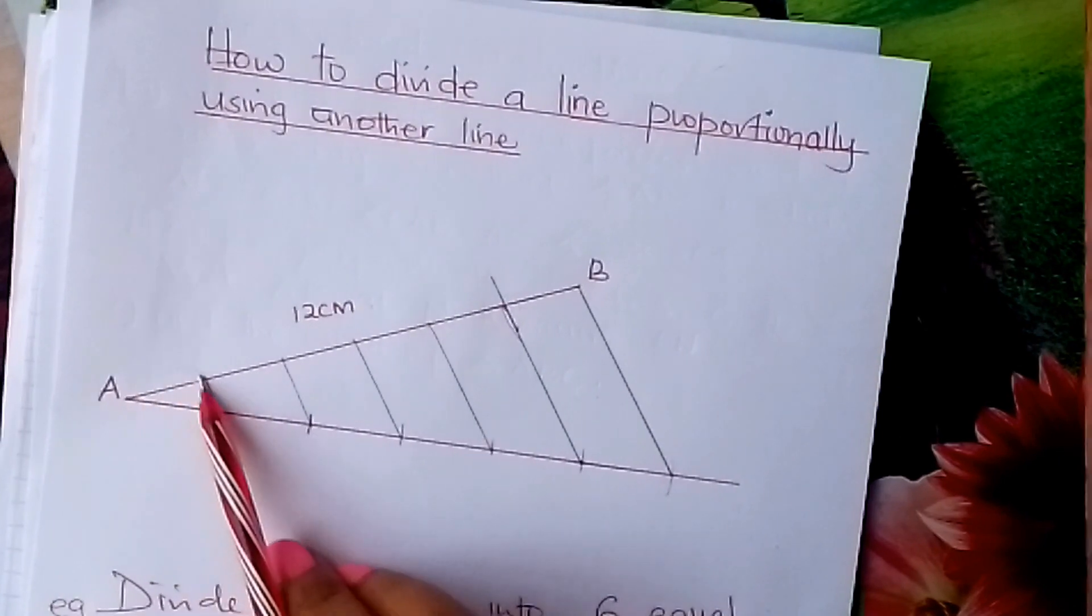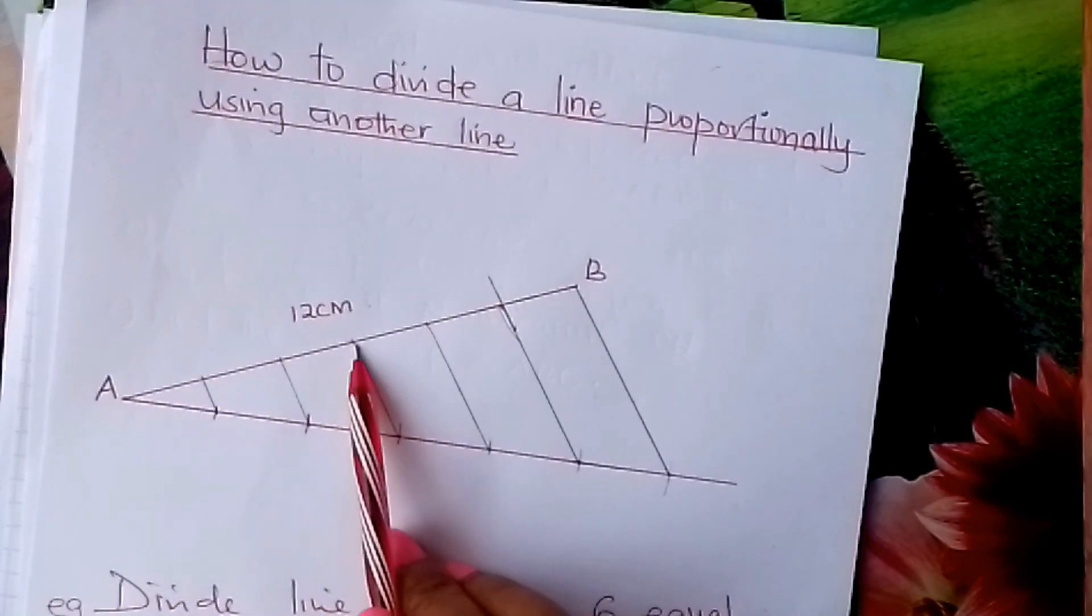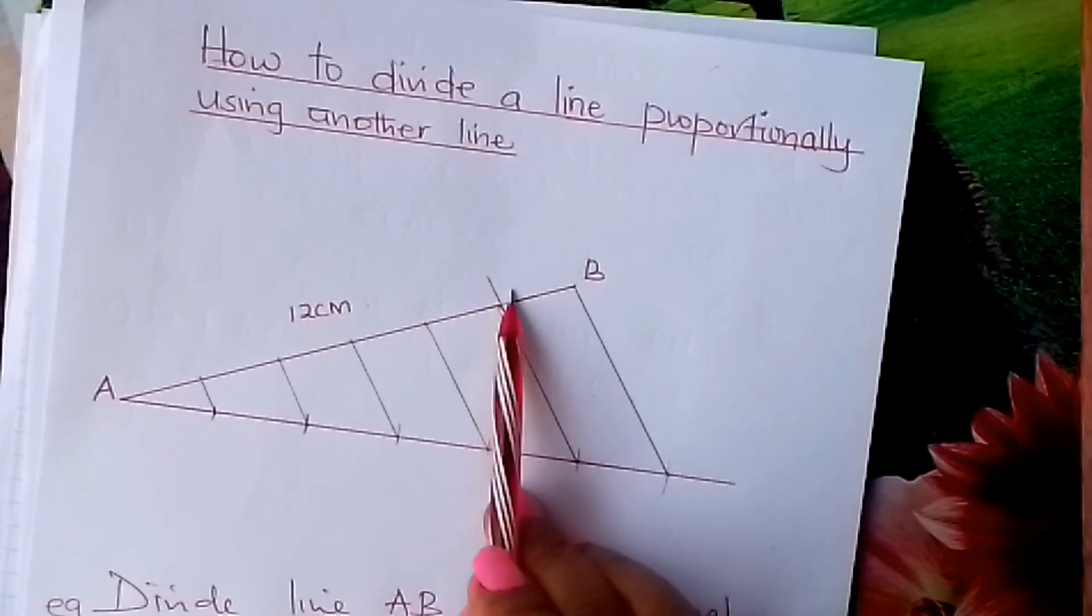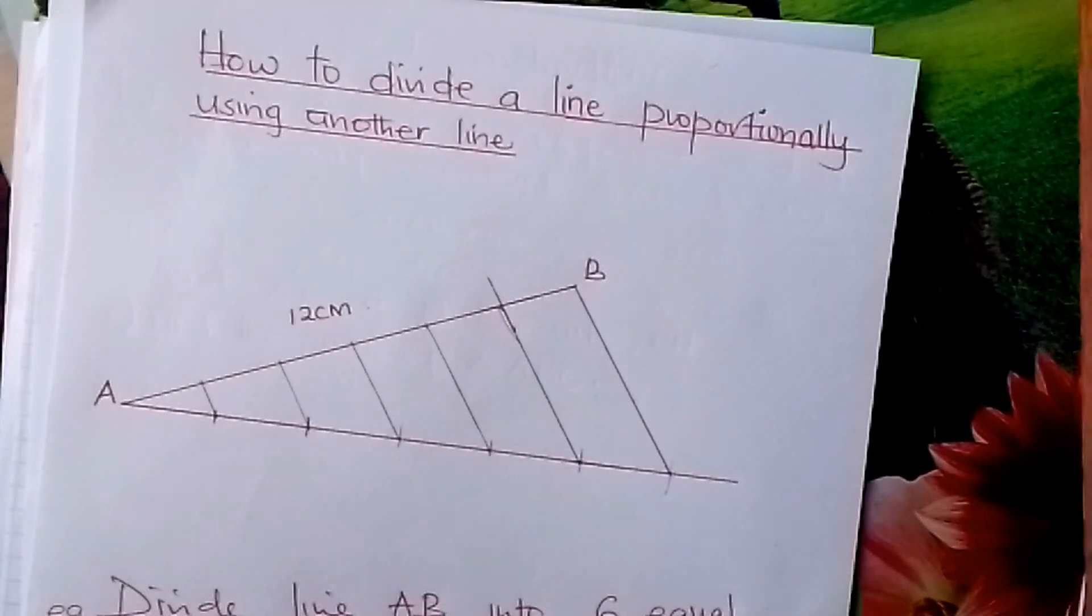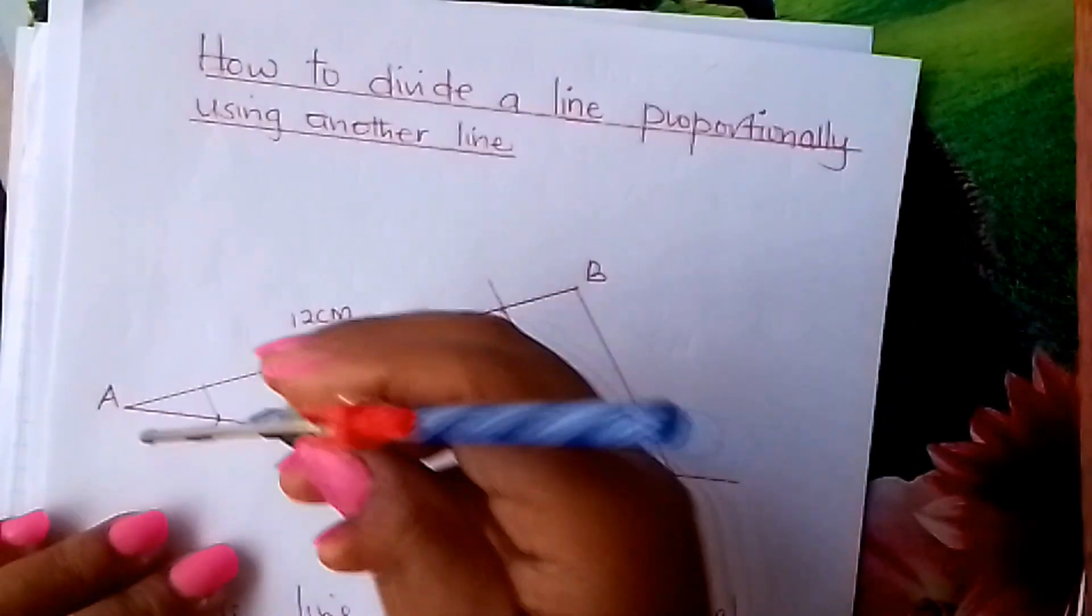We have divided it into one, two, three, four, five, six parts. And each one of them should be equal. All of them should be equal.